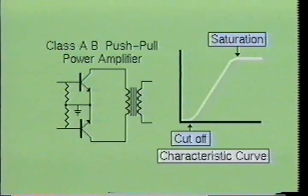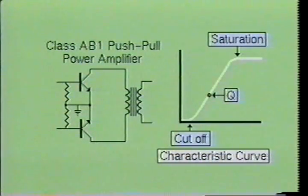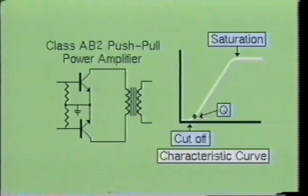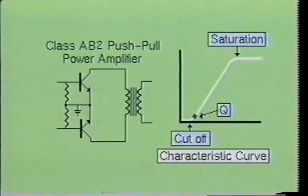There are two types of AB amplifiers: AB1 and AB2. The class AB1 amplifier is biased a little more negative than the class A operating point. In the class AB2 amplifier, its operating point is biased even further negative than AB1, normally at the top of the lower knee of the characteristic curve. Since the AB2 is biased more negative than AB1, it requires more driving power than the AB1 amplifier.